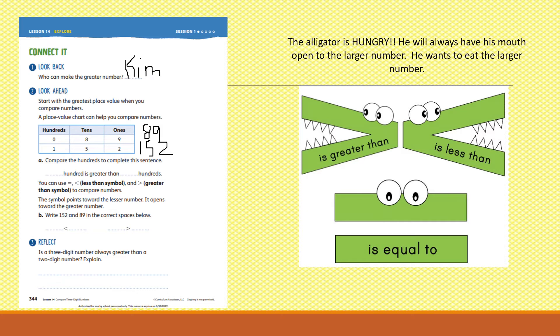Now, it says, compare the hundreds to complete the sentence. Blank hundred is greater than blank hundreds. So, let's look at the hundreds of zero and one. Which number is greater? One hundred is greater than zero hundreds.